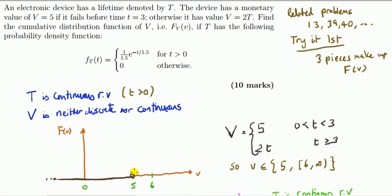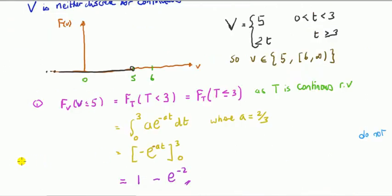The CDF goes from 0 to 1. The minimum value of V is 5, so we start there. There's something from 5 to 6 — it's discrete, so there's a jump at 5 — and then 6 onwards. We can write immediately from the definition of CDF that as V tends to minus infinity the CDF tends to 0. You can't have values less than 5, so the probability that V is less than 5 is 0. There's an open circle at 5 because there is a positive probability that V equals 5.